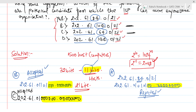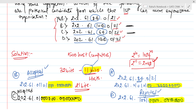For Option D: 202.61.144.0/21. Writing 144 in binary gives 10010000, and the fourth octet is 00000000. The total host bits are 8 plus 4 = 12 bits. We require 11, so Option D also satisfies the condition and is accepted.